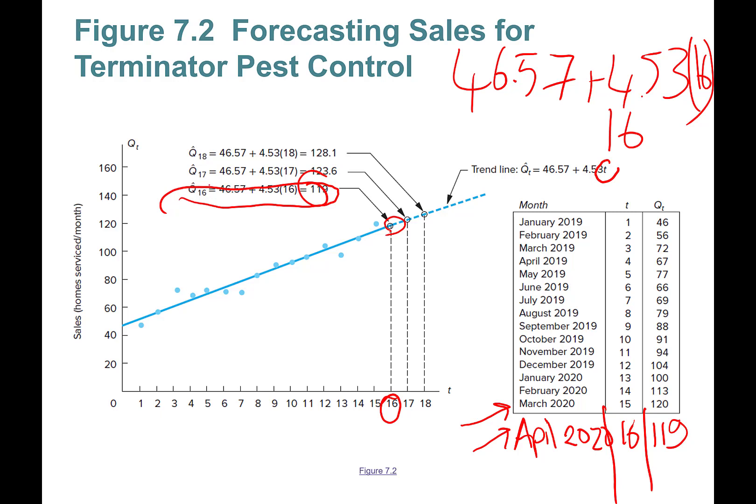What's going to happen with May 2020 sales? The 17th period - you plug in 17 instead of t. If you calculate, you're going to find 123.6. Then you have June 2020, period 18: 128.1. This is how you predict the future values. You plug in the period number in place of t.